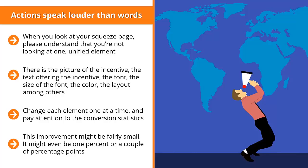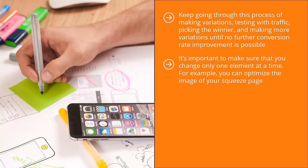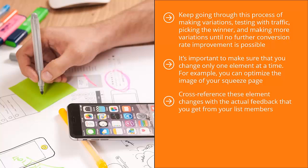The improvement might be fairly small — even one percent or a couple of percentage points — and that's okay. Isolate that variation and make more variations of it. Run traffic through all the variations and see if you can improve your conversion rate further. Keep going through this process of making variations, testing with traffic, picking the winner, and making more variations until no further conversion rate improvement is possible. Then start making variations of another element on your squeeze page, changing only one element at a time, until the squeeze page converts at a fairly high and predictable rate.